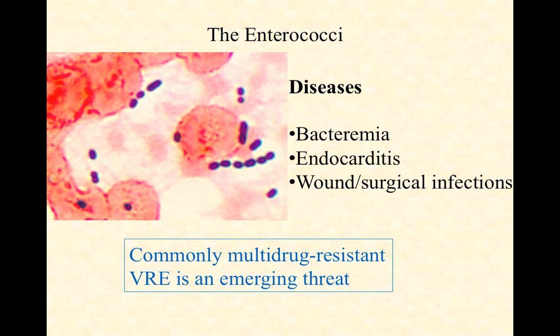Why do we worry about the enterococci? If they stay in our gut, they're typically just fine. They tend to be problematic when they get into the bloodstream and cause a bacteremia. If they begin to form biofilms on the heart, they can cause endocarditis. They are also found in wound and surgical infections, particularly post-op infections. These are naturally multidrug resistant, meaning we have a pretty short list of drugs we can use against these natural strains.